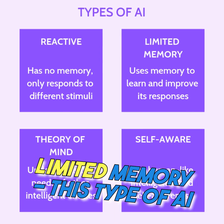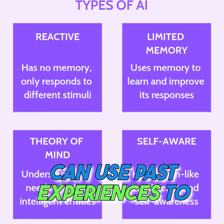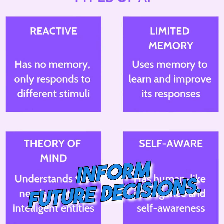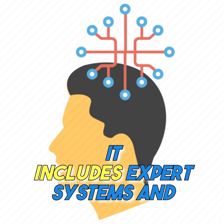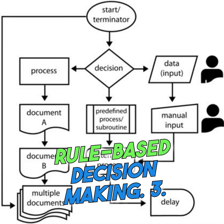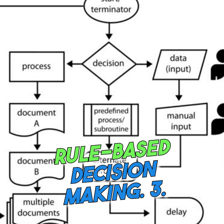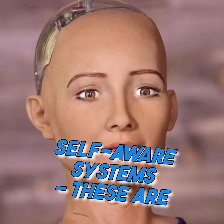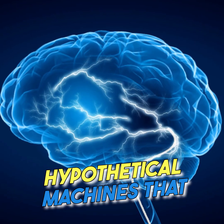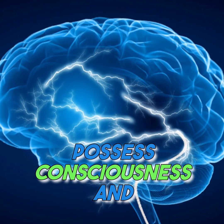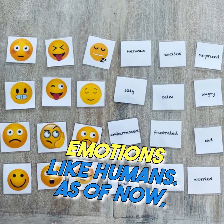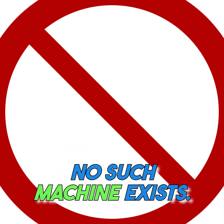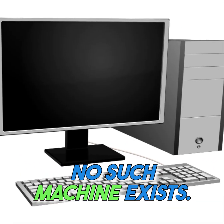2. Limited memory — this type of AI can use past experiences to inform future decisions. It includes expert systems and rule-based decision making. 3. Self-aware systems — these are hypothetical machines that possess consciousness and emotions like humans. As of now, no such machine exists.